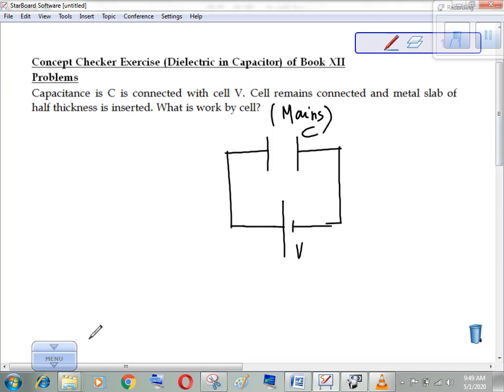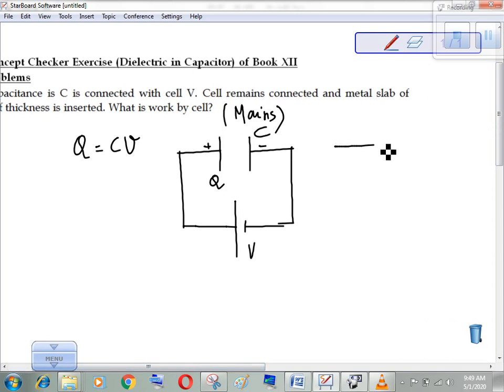Let's see the initial charge on the capacitor. Q is equal to CV. Now we have metal slab in half thickness and the cell is inserted.